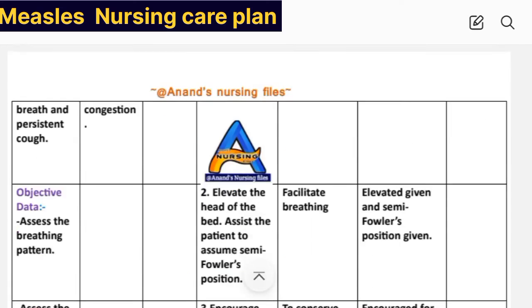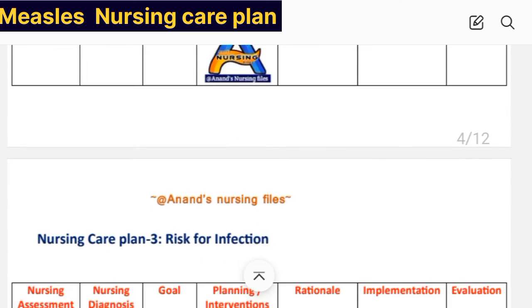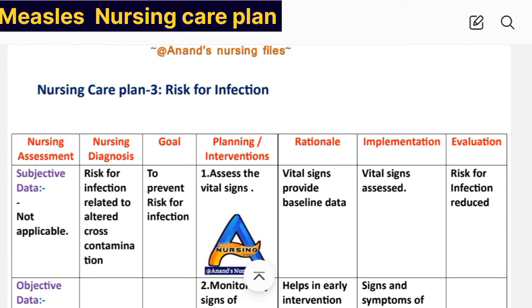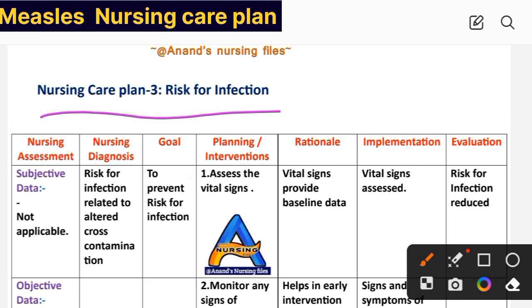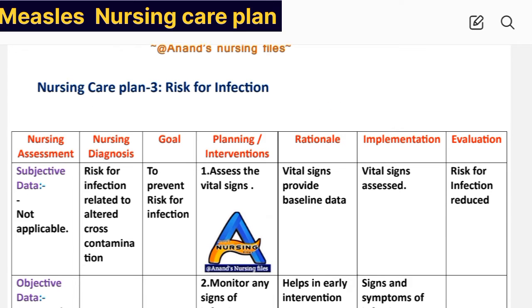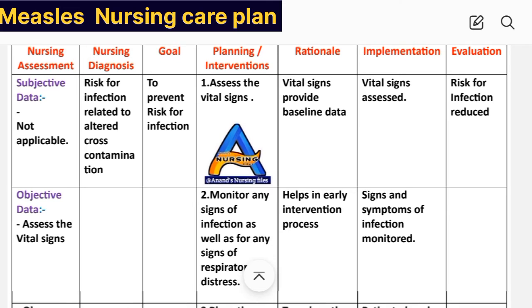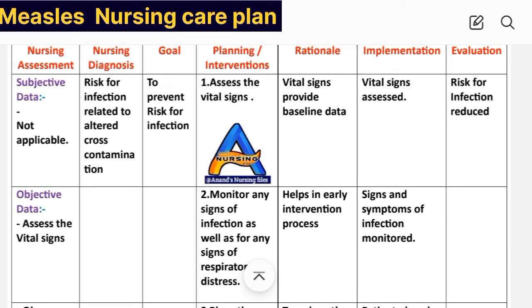Next, care plan number three: risk for infection. Nursing assessment — objective data: not applicable, because this is a risk diagnosis, meaning signs and symptoms have not yet appeared.